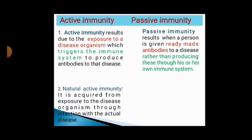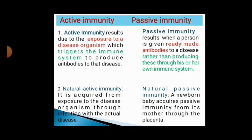Both active immunity and passive immunity can result either naturally or artificially. Natural active immunity is acquired from exposure to disease organisms through infection with the actual disease. Whereas natural passive immunity occurs when a newborn baby acquires passive immunity from its mother through the placenta — immunoglobulin G is passed from mother to fetus through the placenta, and thus the baby acquires natural passive immunity.